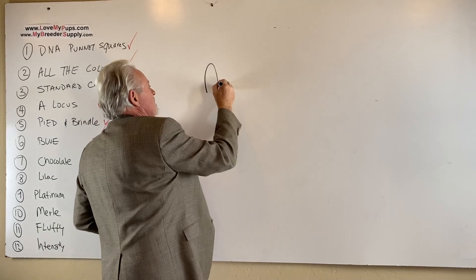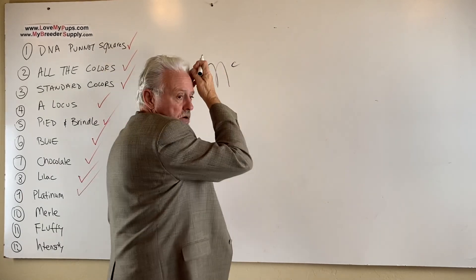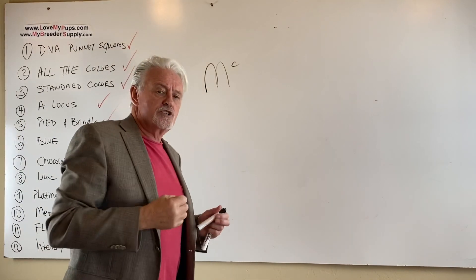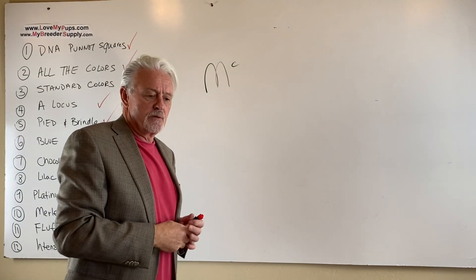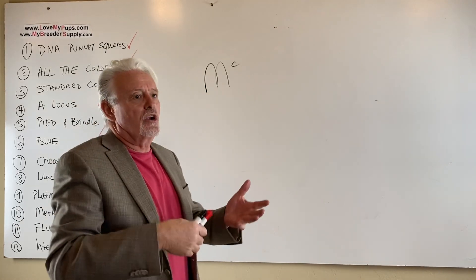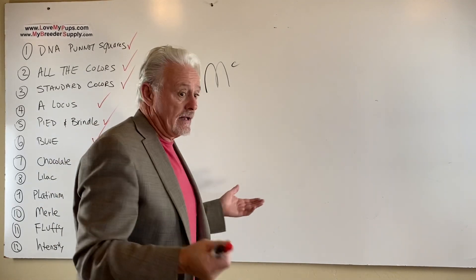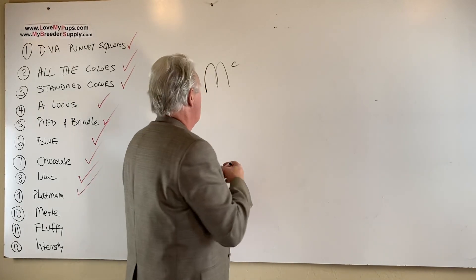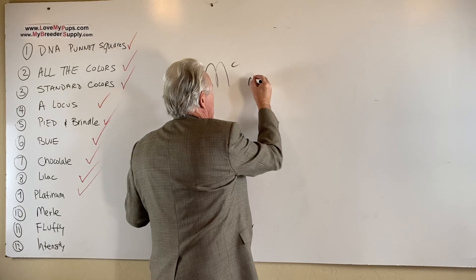So if a dog comes back on a test as that cryptic Merle, what the heck is that? That is a dog that has the Merle gene, but it doesn't express itself anywhere. I guess it's like just got a little bit of Merle in there. How the heck that could happen? I don't know. But that dog can be bred back to. So that would be a dog that will come back MC, little m.